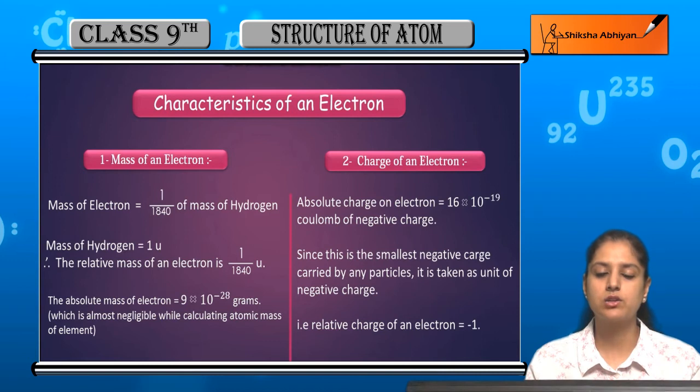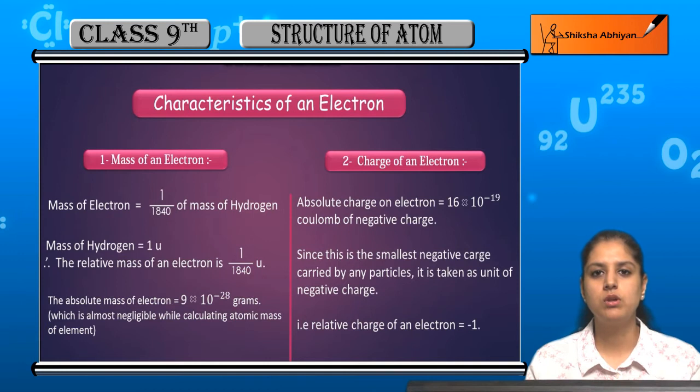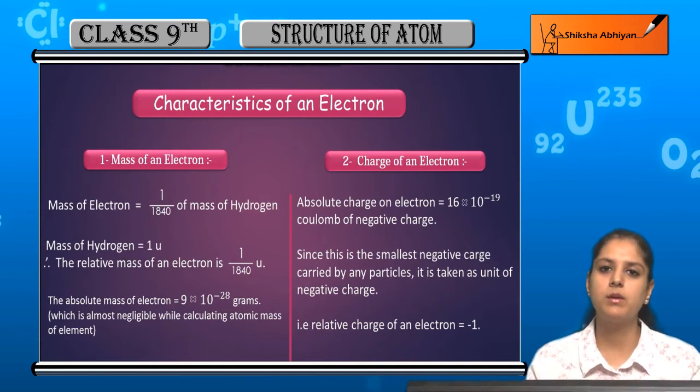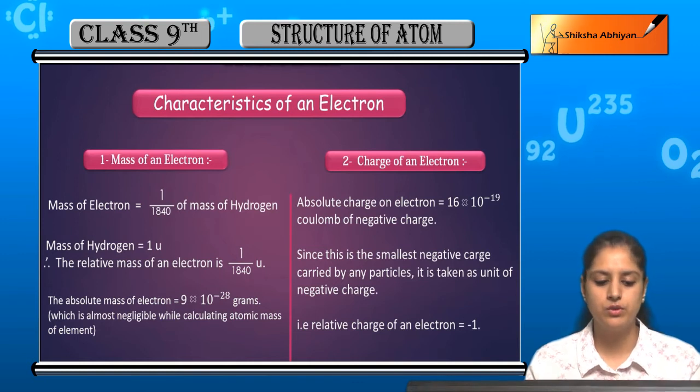The relative mass of electron becomes 1/1840u. If we take 1u as hydrogen's mass, then electron's relative mass will be 1/1840u.